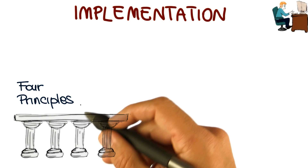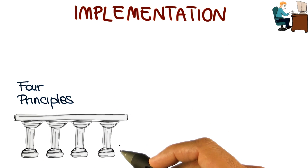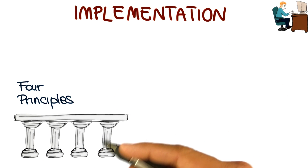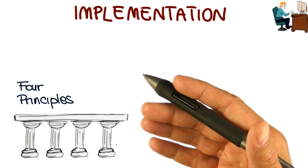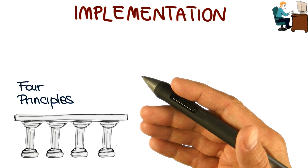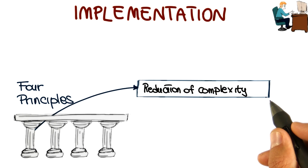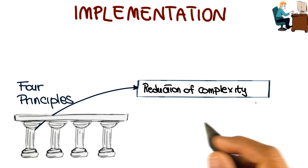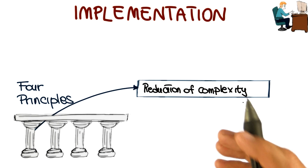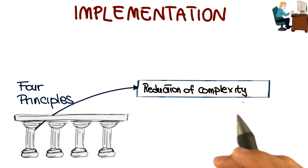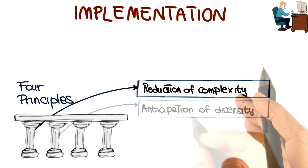There are four fundamental principles or pillars that can affect the way in which software is constructed. The first one is the reduction of complexity, which aims to build software that is easier to understand and use.